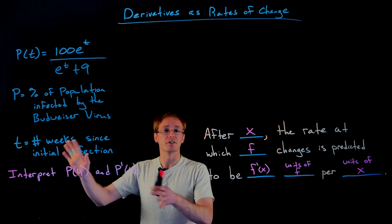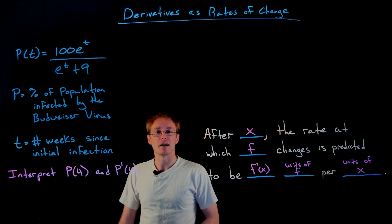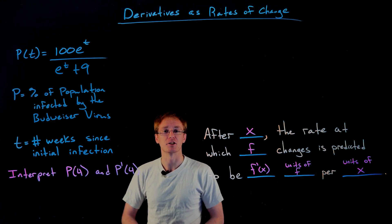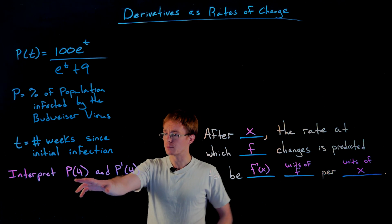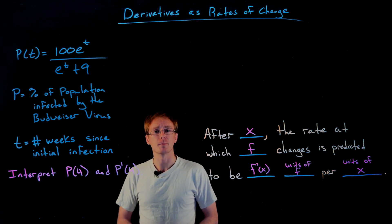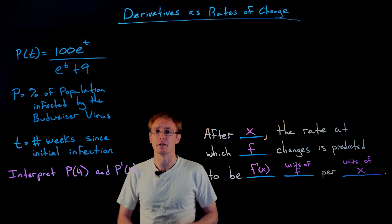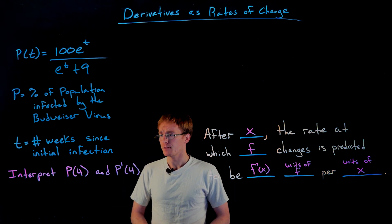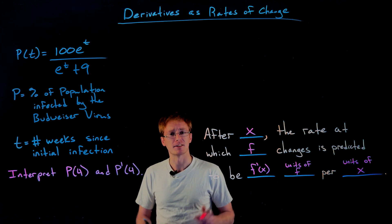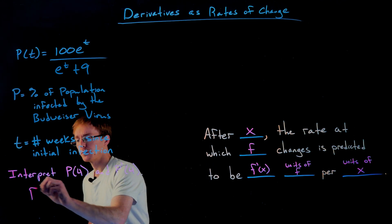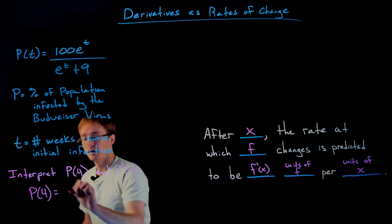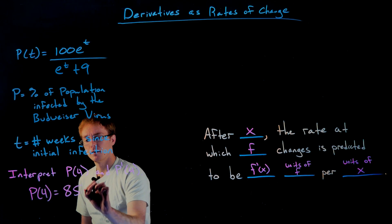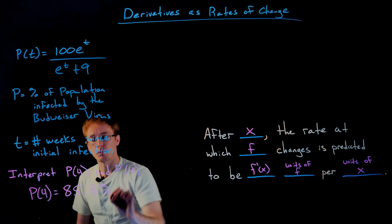We're trying to figure out what plugging 4 into our function or into the derivative actually tells us. This data is all made up — that's why I'm calling it the Budweiser virus, not to confuse it with the coronavirus. Do not use this to make any predictions about the coronavirus. Let's start by interpreting p of 4. If we evaluate our function at 4, we get about 85.8 percent.